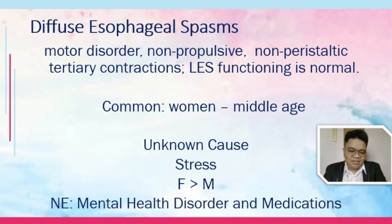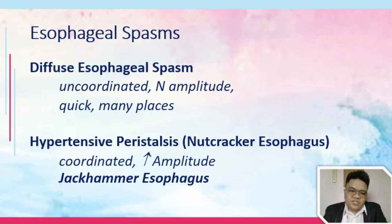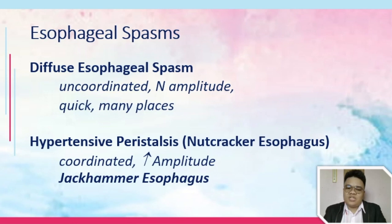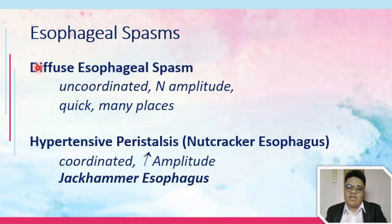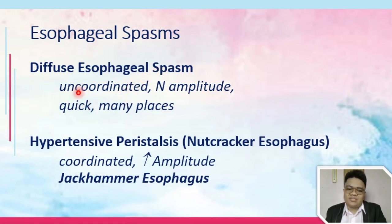Diffuse esophageal spasm is more common among women compared to men. There is a specific type referred to as nutcracker esophagus, which is common among patients with mental health disorders and those on psychiatric medication. Esophageal spasms are divided into two kinds: diffuse esophageal spasms and hypertensive peristalsis. Diffuse esophageal spasms are described as uncoordinated movements of your esophagus — normal in amplitude, but quick and occurring in many parts of the esophagus.